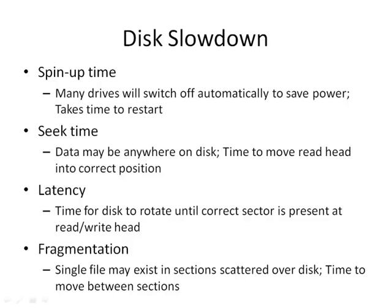There are a number of issues relating to hard disk performance. Most hard disk drives will switch off automatically to save power, meaning there's some spin-up time when you start using one after a period of inactivity. Data can be distributed across the disk in a wide range of locations, so the disk head may have to move — there is seek time. There is also latency because the disk may have to rotate until the correct point on the surface is reached. And fragmentation means single files can be stored in scattered locations, adding additional time as the drive head moves between positions.